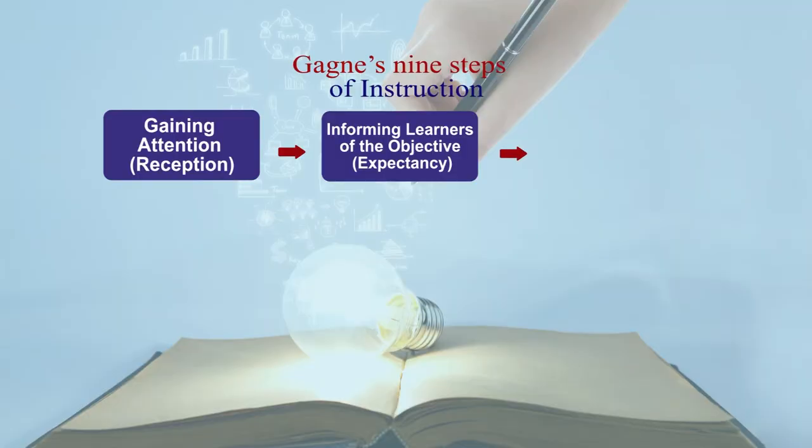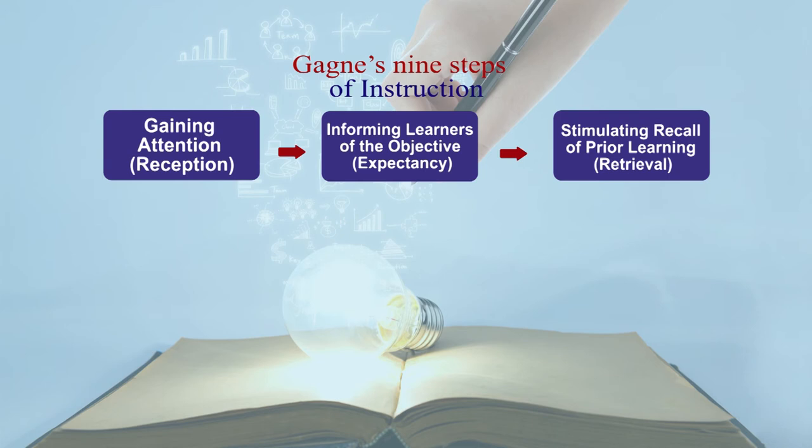When you start your instructional process, you also try to connect whatever you are going to teach with their prior learning. This is called retrieval. You try, through questions, interaction, or some activity, to stimulate recall of their prior learning related to the objectives you have discussed. Because nowadays learners are not blank slates — they are not tabula rasa. They come with some knowledge, information, and experiences. So any experience related with the concept you are going to teach, that connectivity is required, which is called retrieval.